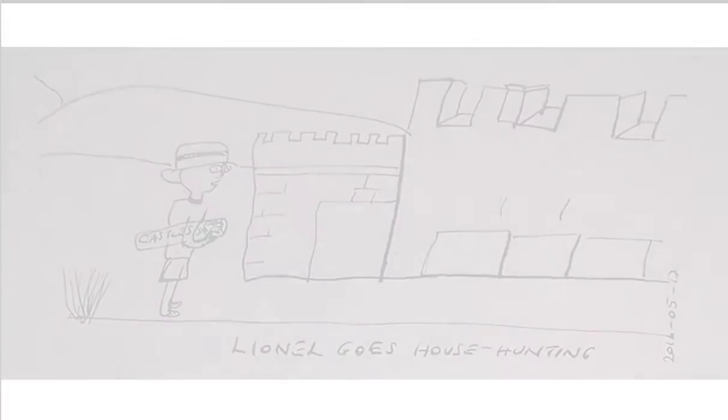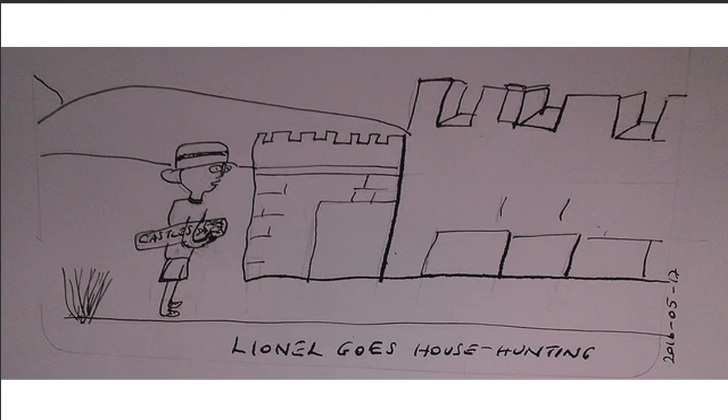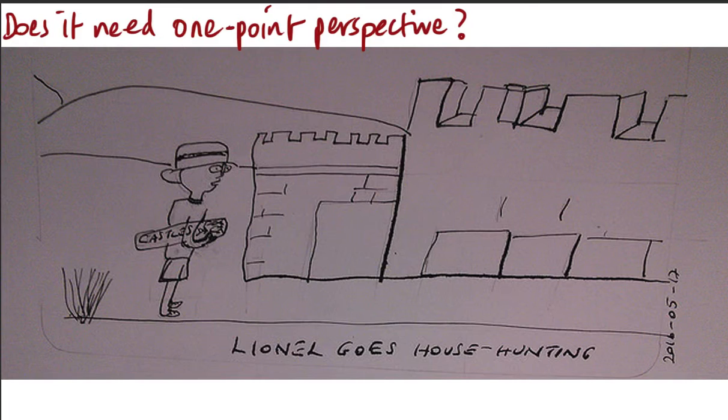This is a great question, so let's dive right in and take a look. So this is the picture we're using to show us how you can get into a pickle with one-point perspective. And the question is, does this need one-point perspective? And how do we even start to decide whether we do need it or not?